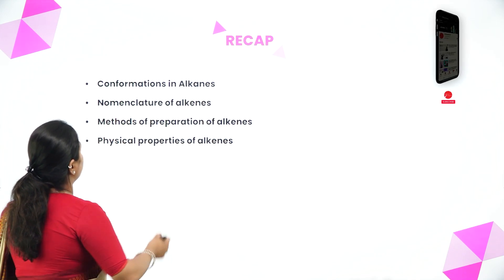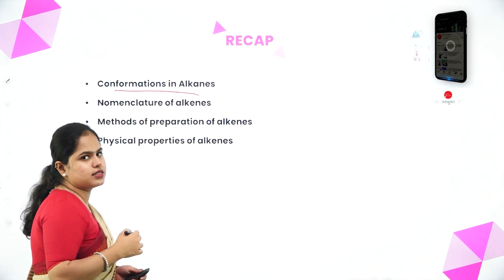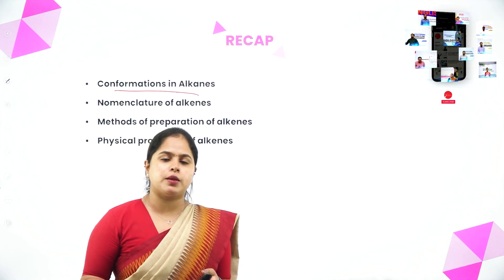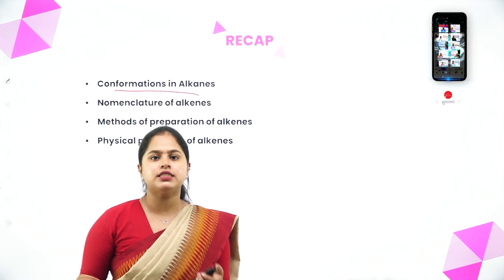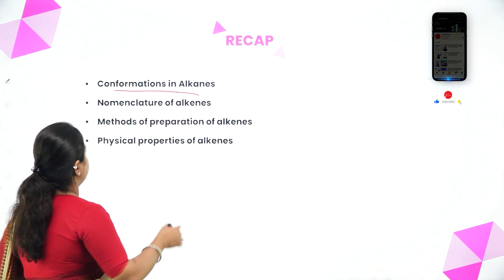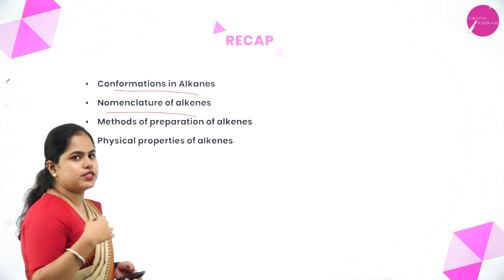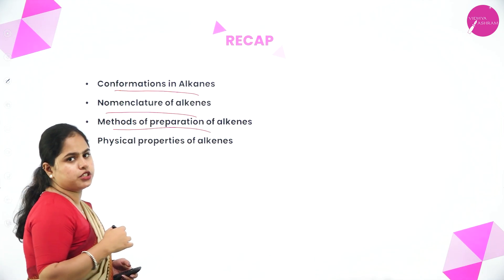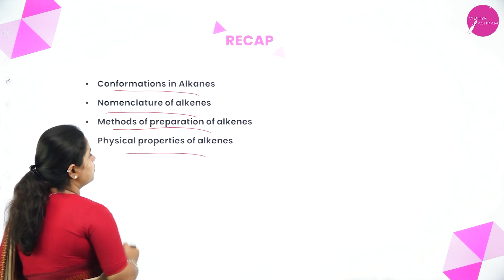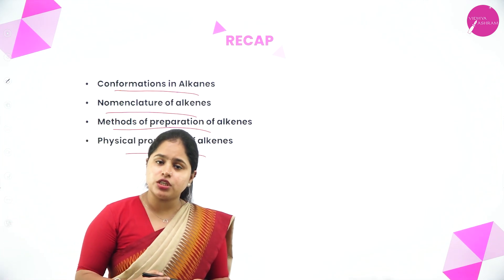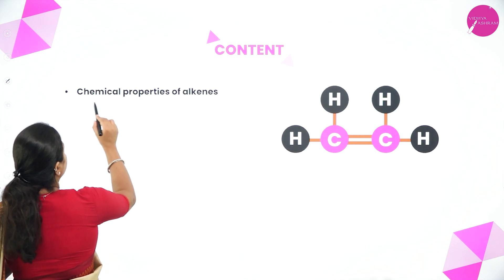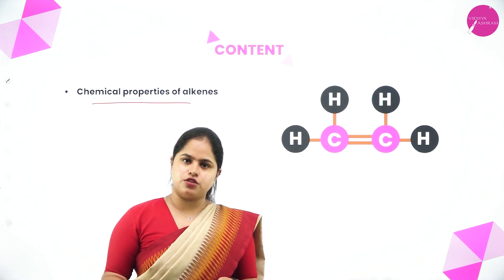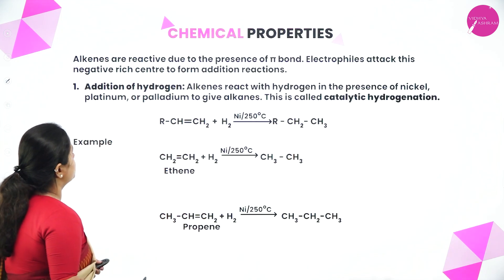Today we are back with session 4 of the chapter Hydrocarbons. In the last session, we discussed conformations in alkanes — that is eclipsed and staggered conformation — and the two ways to represent them: Newman's and sawhorse conformation. We also completed nomenclature of alkenes and the methods of preparation of alkenes, as well as the physical properties of alkenes. In today's session, we are going to study the chemical properties of alkenes — that is, the chemical reactions of alkenes.